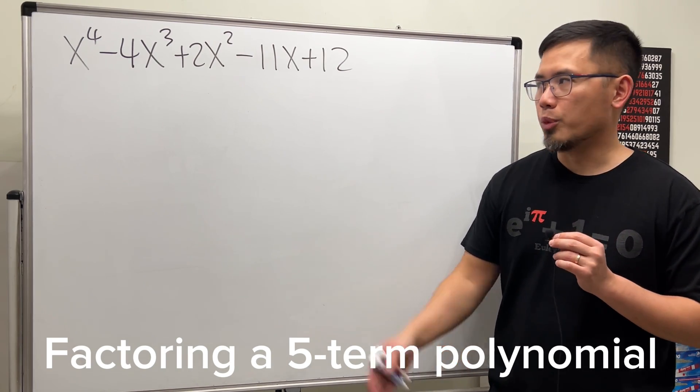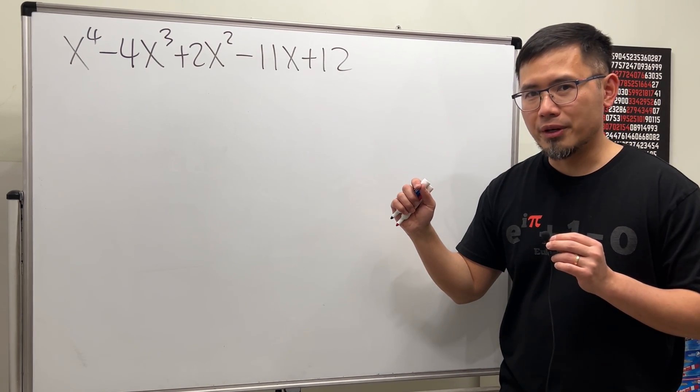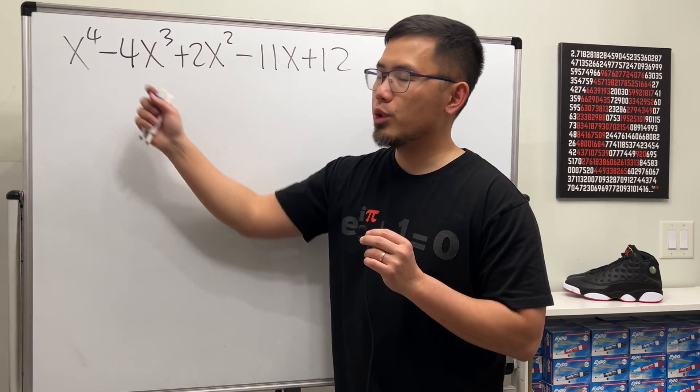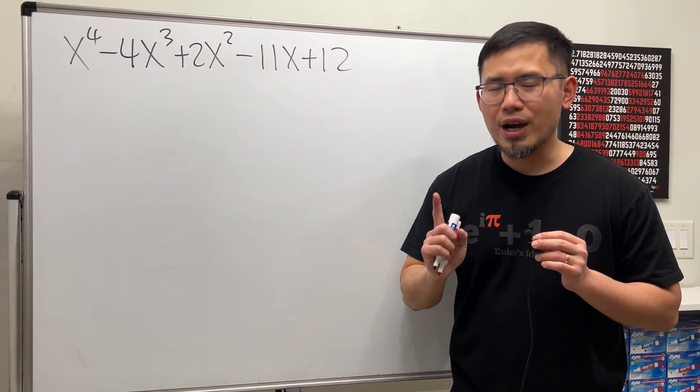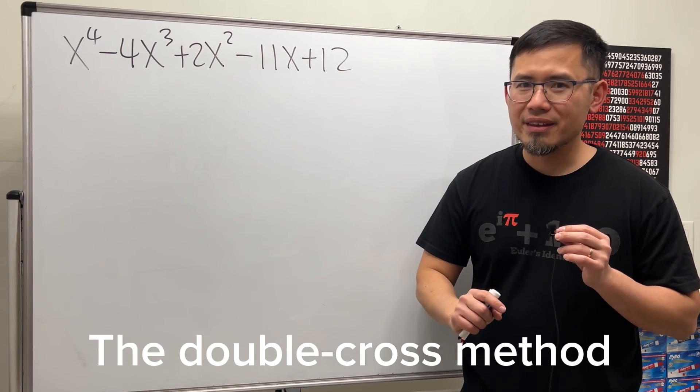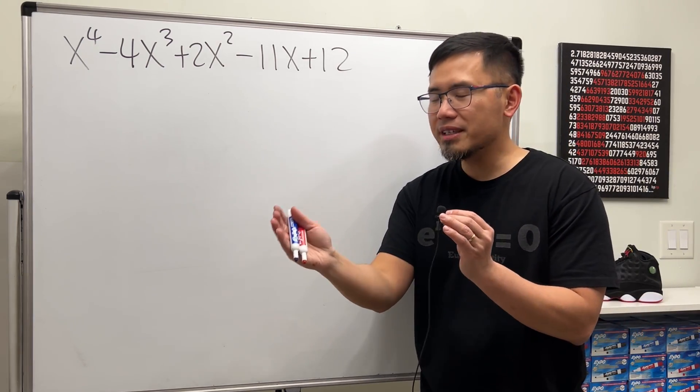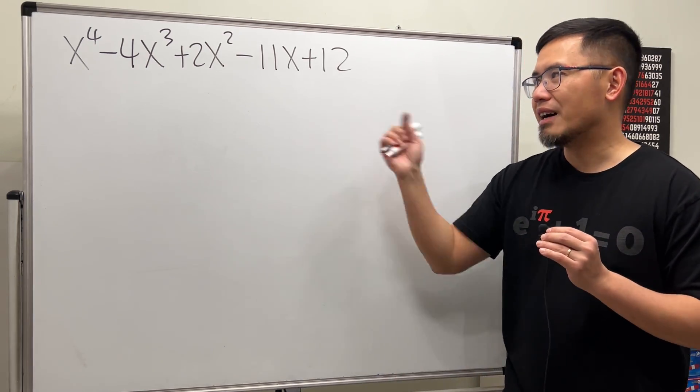So how do we factor a fourth degree polynomial like this? Well, for this particular case, we have a fourth degree polynomial, so we can try the double-cross method, which is just a way to break this down as a quadratic times a quadratic.